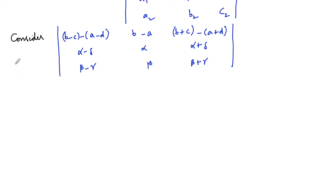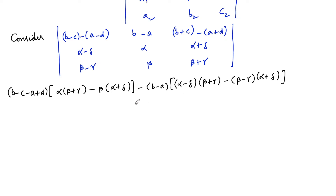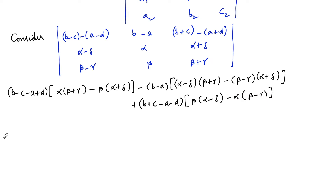Expanding the determinant: the first term is (b minus c minus a plus d) times [alpha times (beta plus gamma) minus beta times (alpha plus delta)], minus (b minus a) times [(beta minus gamma)(alpha plus delta) minus beta(alpha plus delta)], plus (b plus c minus a minus d) times the remaining minor involving beta plus gamma and beta minus gamma terms.